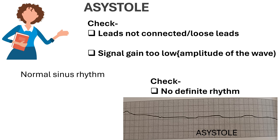Once you check the patient and feel that everything is all right, immediately check the pulse of the patient. If there is no pulse, no breathing, and the patient is unresponsive - these are the manifestations of Asystole.